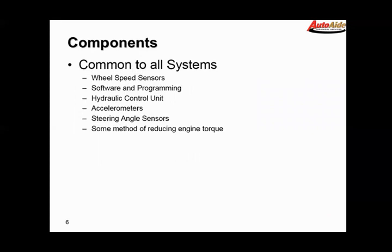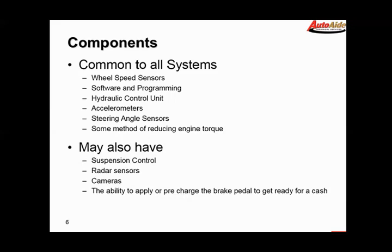Typical components common to all systems: wheel speed sensors, software and programming, the hydraulic control unit, accelerometers, steering angle sensors, and some method of reducing torque communication bus lines, that sort of thing. The car may also have, depending on level of vehicle, suspension control, radar sensors, cameras, the ability to pre-charge a brake pedal to get ready for a crash, all that kind of stuff that we cover more in our ADAS class.